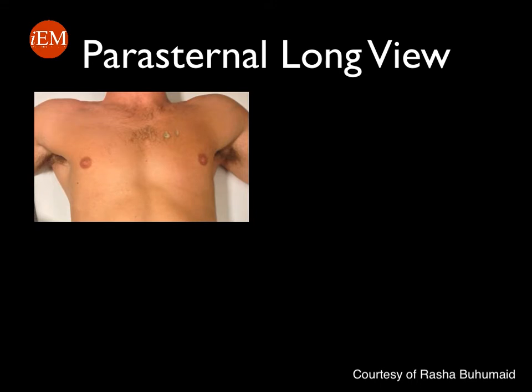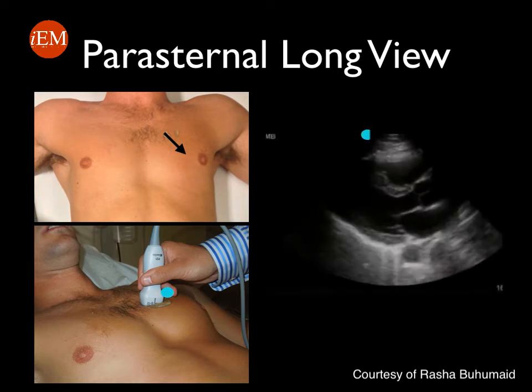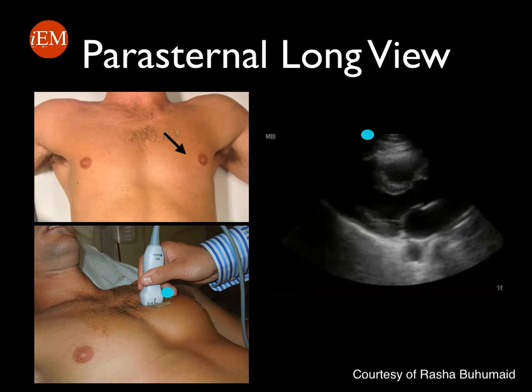The parasternal long view is obtained by placing the phased array probe in the anterior chest wall between the third and fourth intercostal space. The probe marker will be pointing towards the patient's left hip. This is the ultrasound video that corresponds to a normal parasternal long view.